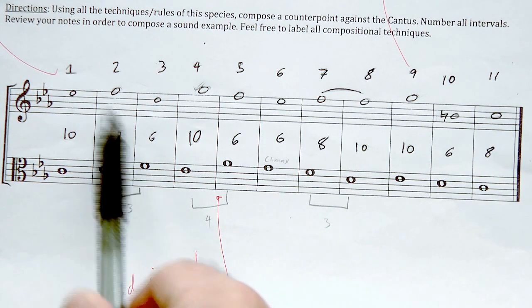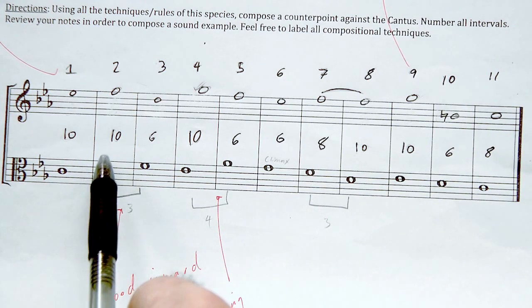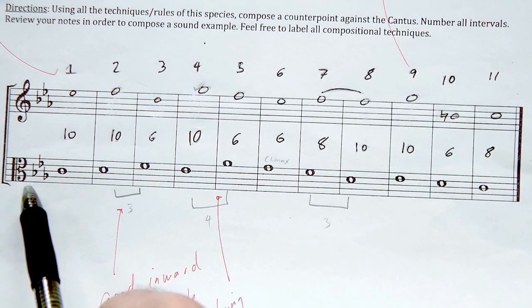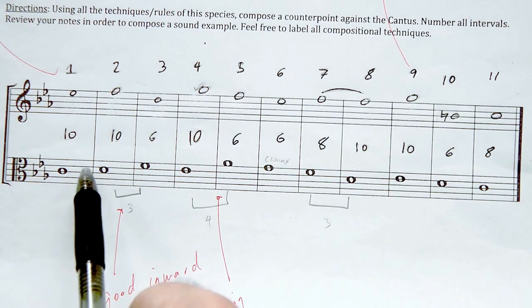And also, these skips of a third are inward in contrary motion. And additionally, he's skipping between a tenth and a sixth. And those are the three components that are needed in order to have a smooth double skip if you're going to use it.